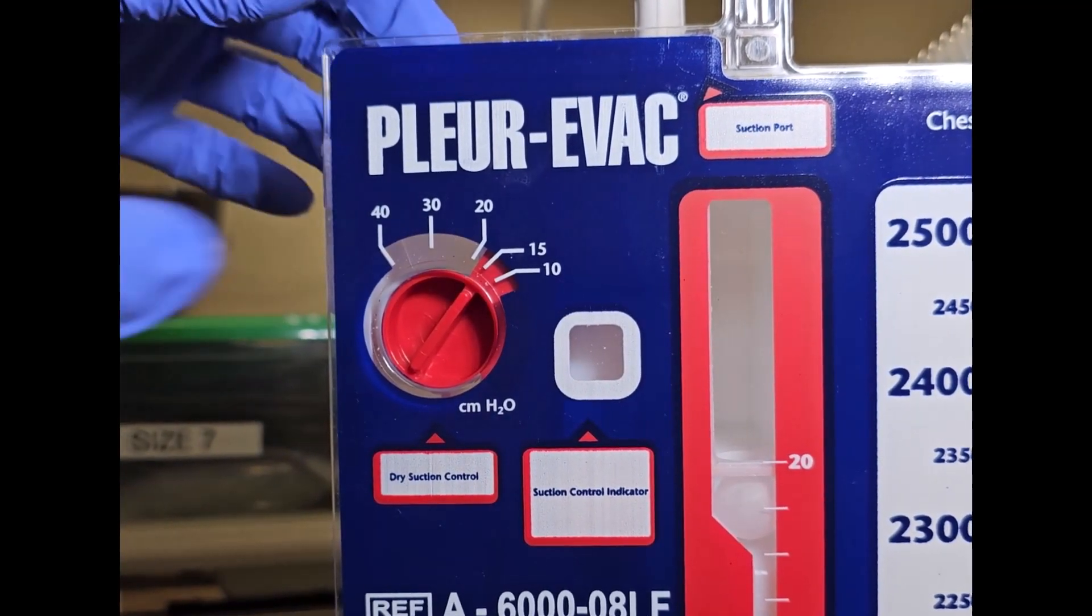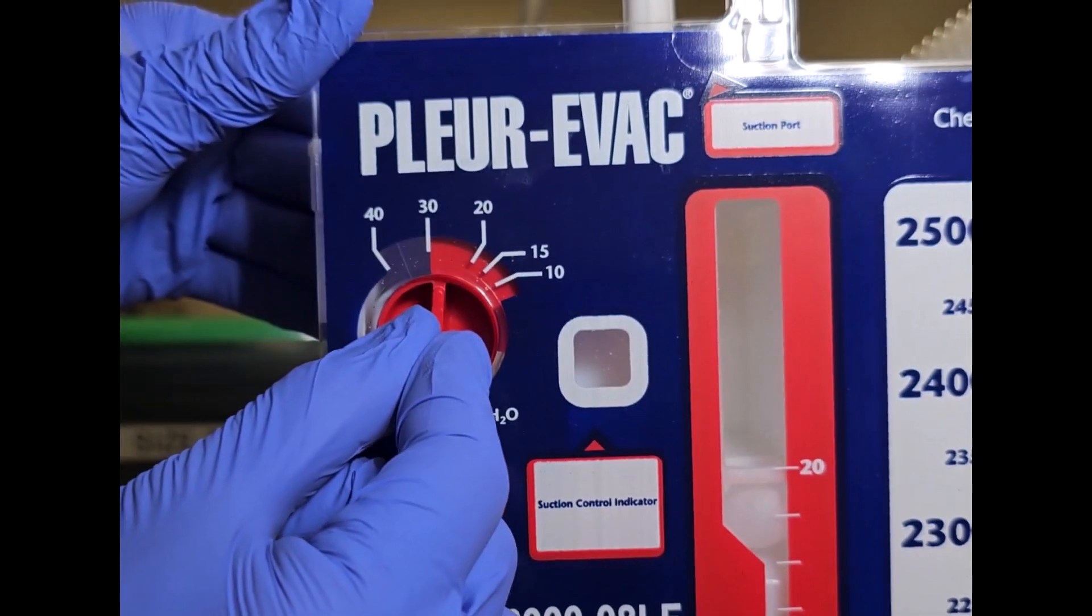You can adjust the ordered suction level by simply turning this dial on the front of the unit.